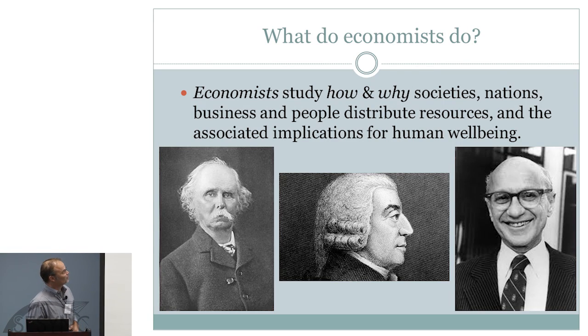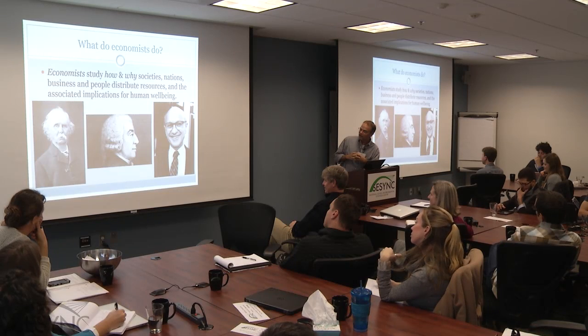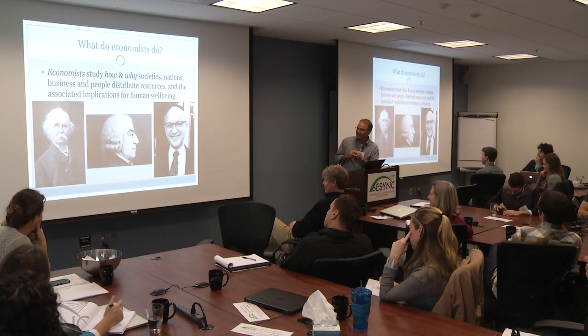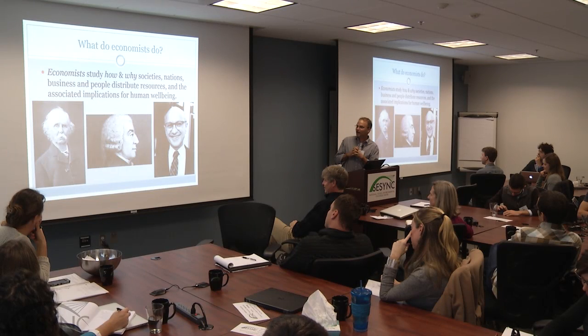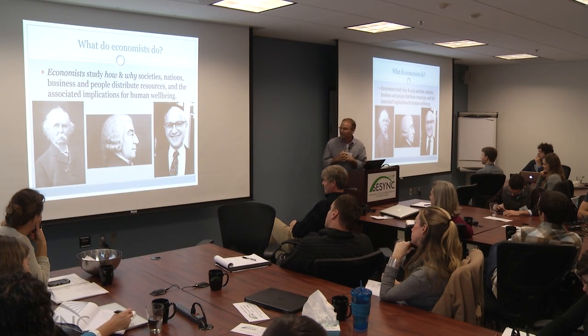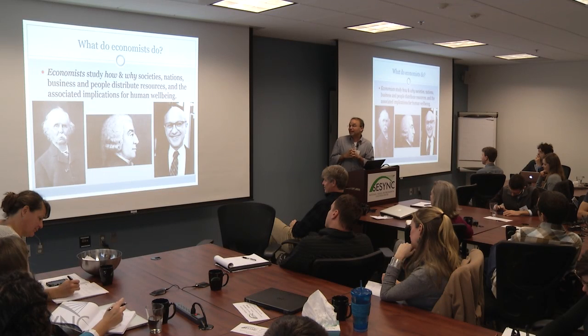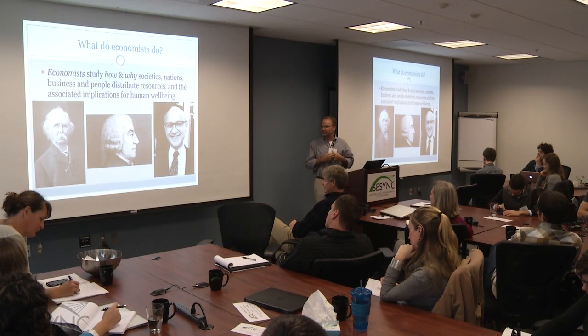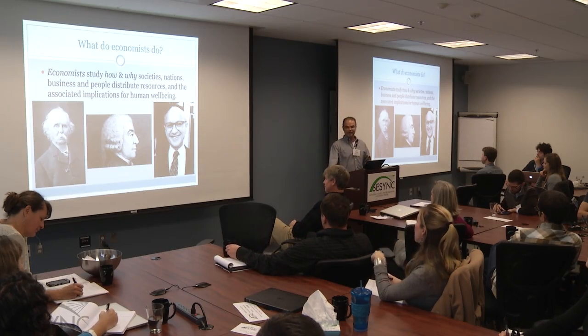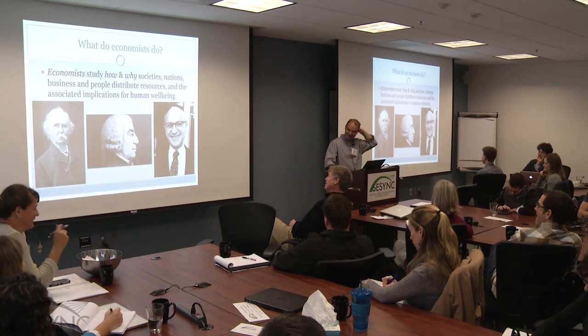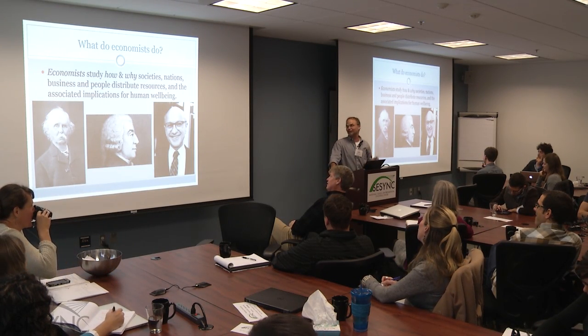What do economists do? We study how people deal with scarcity, how we distribute resources. All the way on the left, that's Alfred Marshall — he's sort of the father of the supply and demand model, the market model; he wrote in the late 1800s. The guy in the middle is Adam Smith, from the late 1700s — he looked at rational self-interest and how it promotes social interest under certain conditions. And on the right, Milton Friedman, perhaps the 20th century's most vocal advocate for free markets.